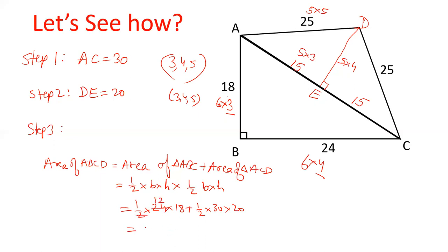We will cancel out, this is 12, 12 into 18 is 216, and if we cancel out this is 15 times 20, this is 300. Both total 300 and 216 is 516 cm square.